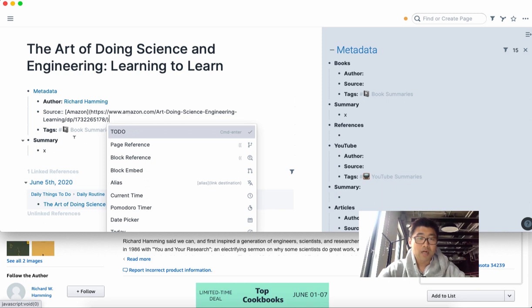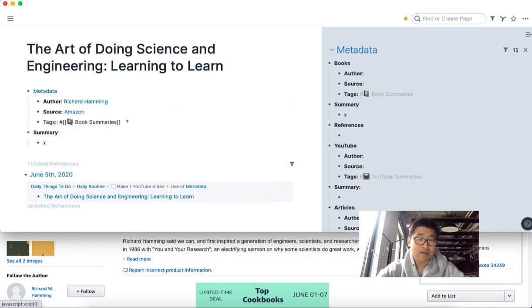And then for the tags, as you're going through the book or when you're adding the book at the beginning, you can just have book summaries here initially and then add the relevant tags as you go along. You don't need to populate all the relevant tags initially, and then you can make your summary notes as you go along.